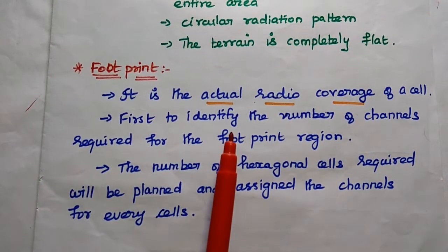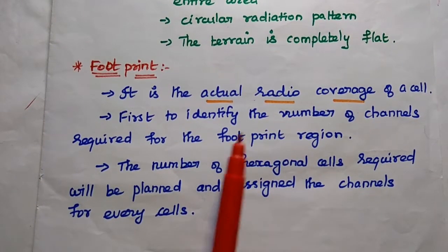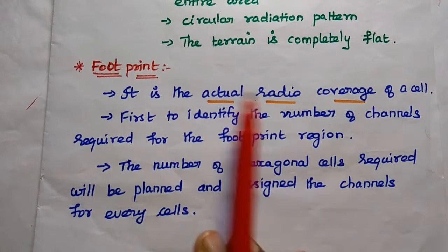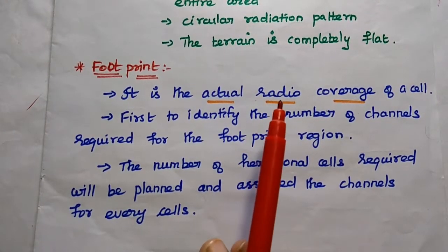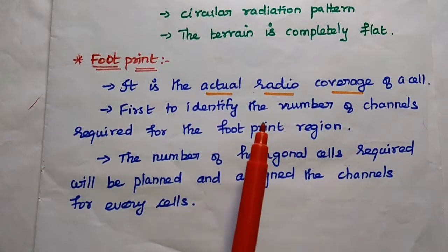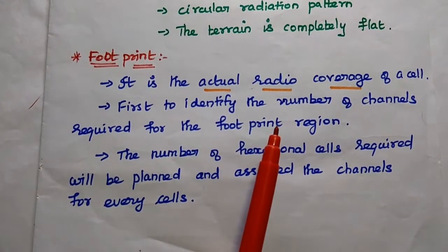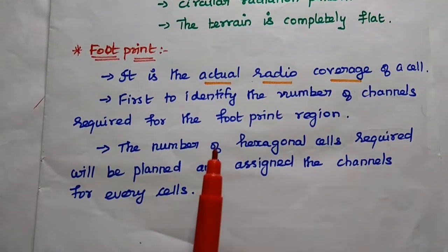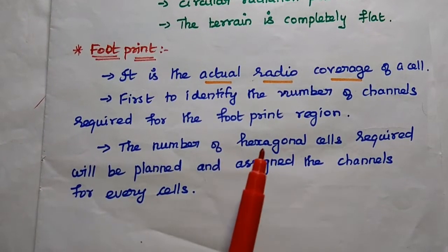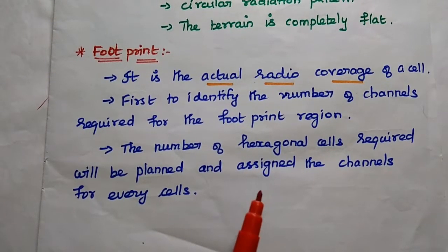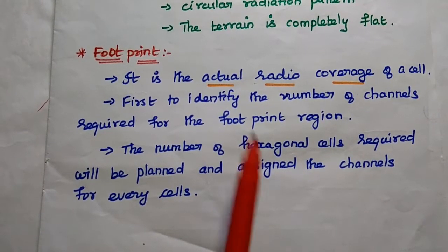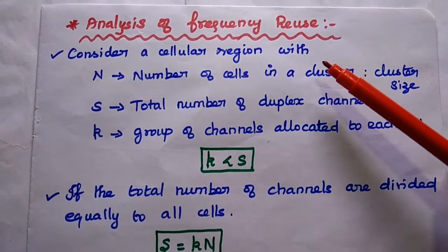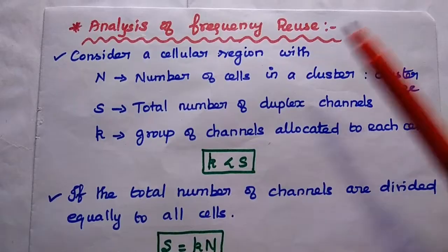After finding the footprint, we can identify the number of channels required for the footprint region. For example, if this footprint region is about 1 kilometer, for that 1 kilometer we can identify the number of channels required. Then we can finalize the number of hexagonal cells required and assign the channels for every cell. These are the steps involved in designing the frequency reuse process.